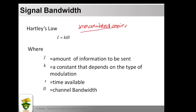An unmodulated sine wave carrier exists only at one frequency, so a single sine wave has zero bandwidth. However, for a modulated carrier, the signal is no longer a single sine wave and therefore occupies a greater bandwidth. Exactly how much bandwidth is needed depends on the baseband frequency range.